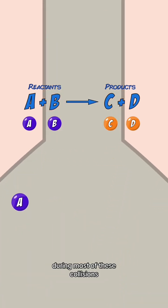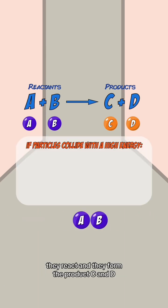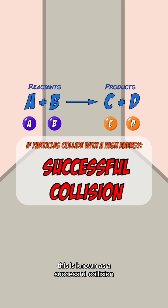During most of these collisions, nothing happens, but if the particles collide with a high enough energy, they react and form the products C and D. This is known as a successful collision.